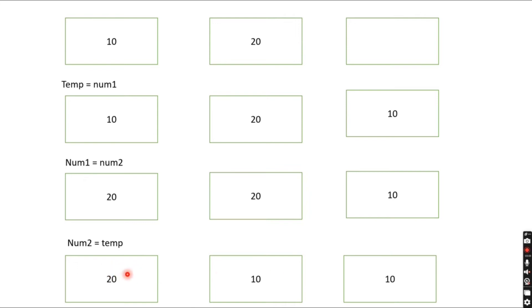In the final output you can see the values have been swapped — num1 is now 10 and num2 is now 10. So basically you need to follow these three steps to swap the values.